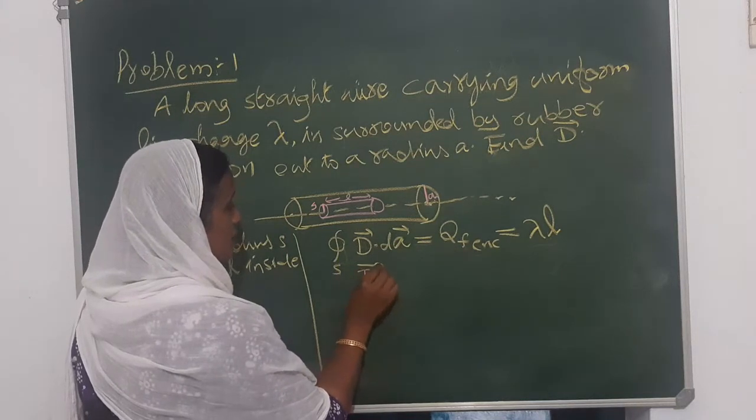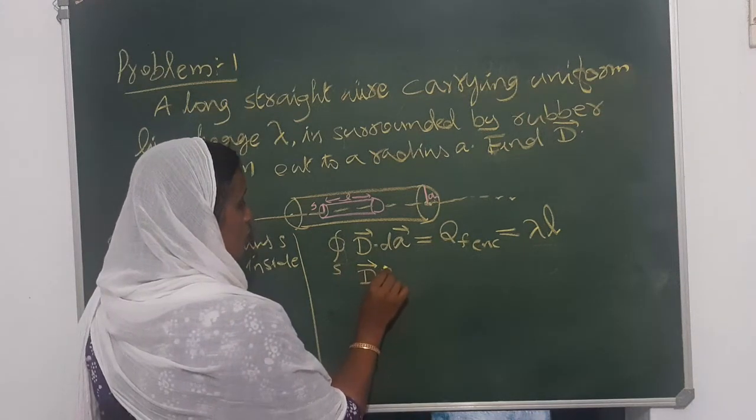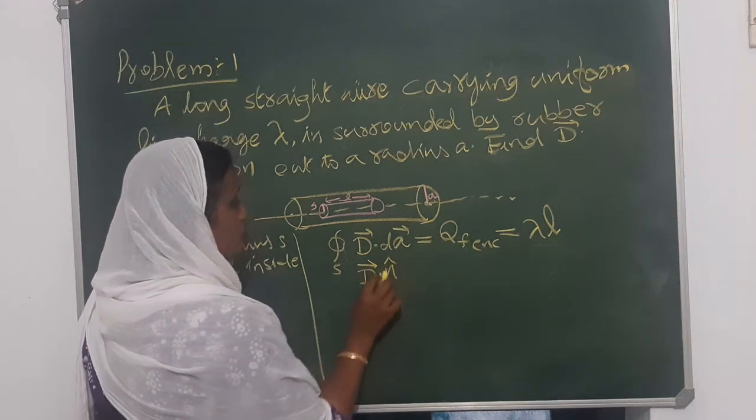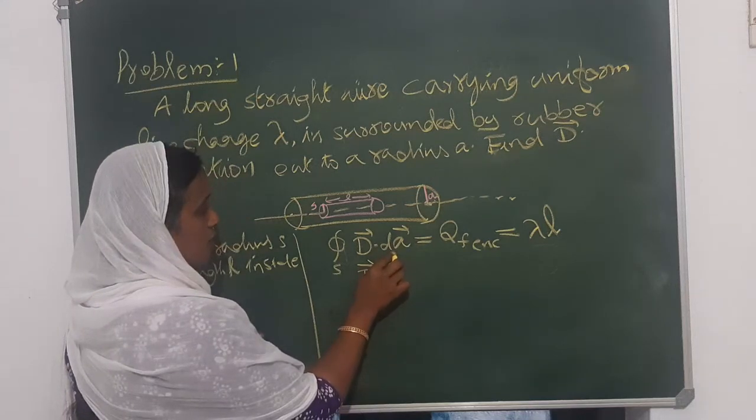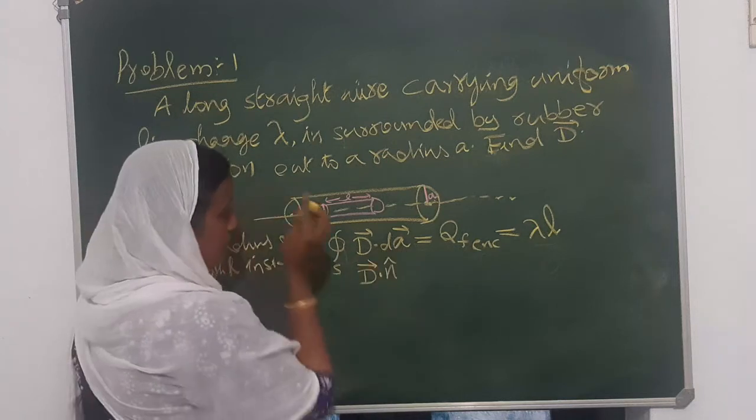Electric displacement vector D into normal to the surface. Because of this area vector.